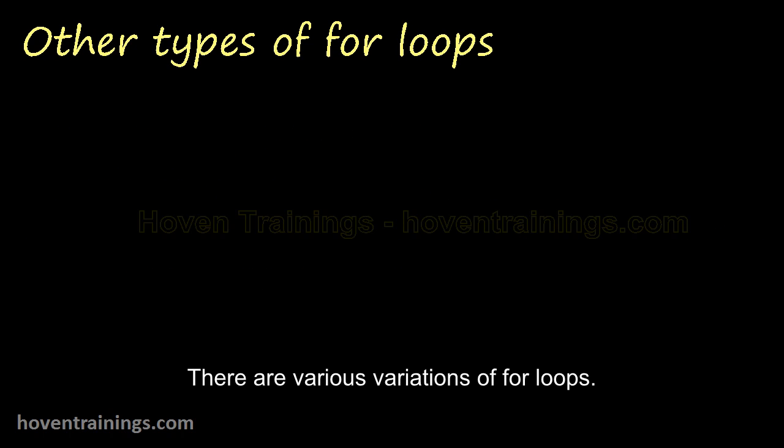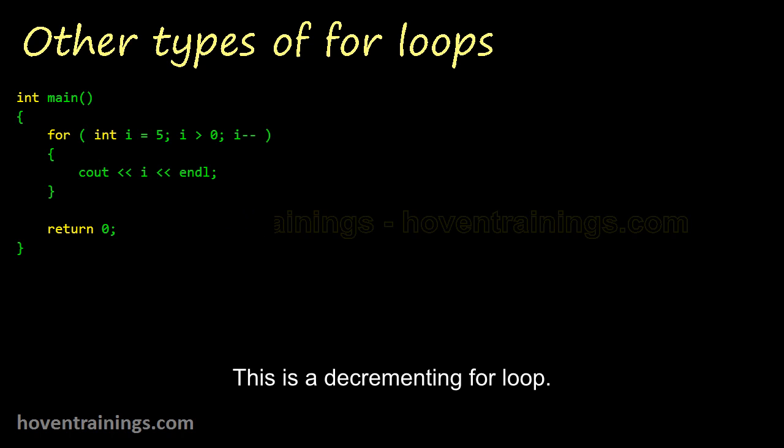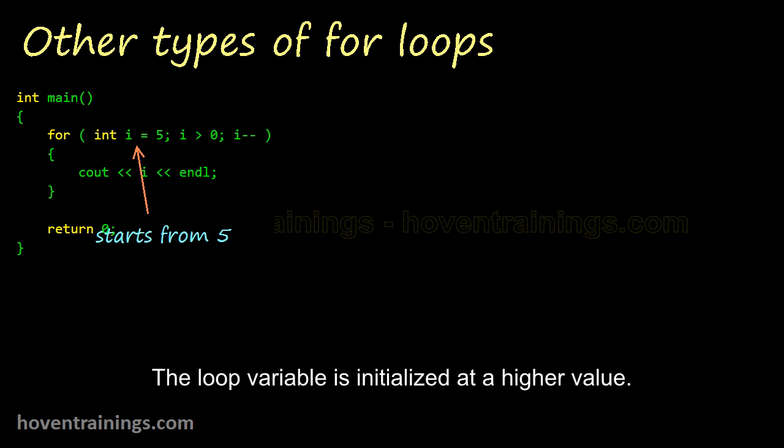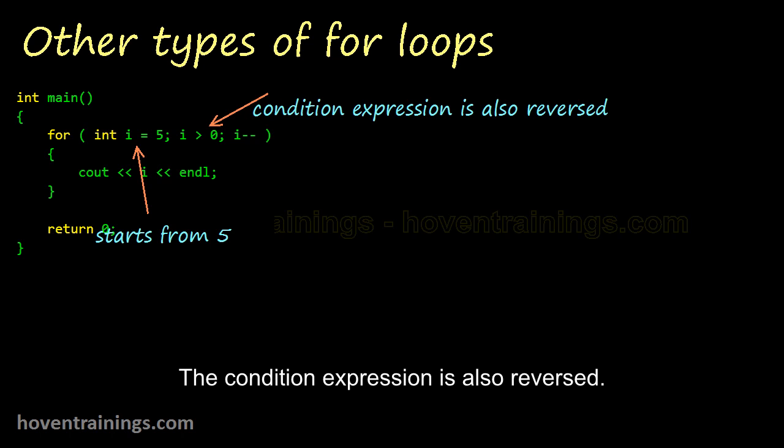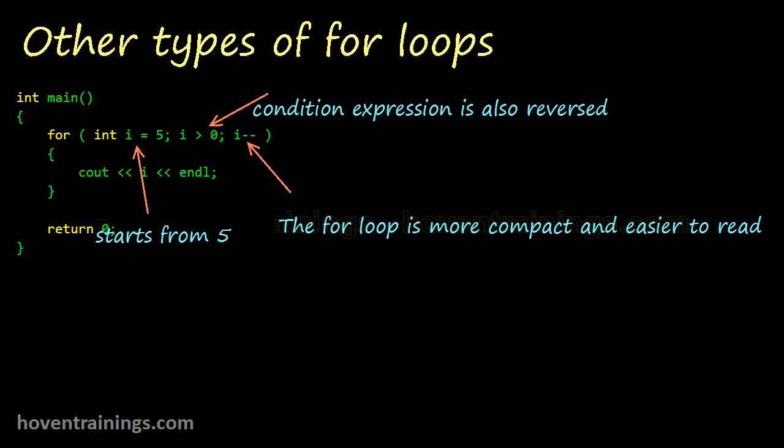There are various variations of for loops. Let me show them here. This is a decrementing for loop. The loop variable is initialized at a higher value. The condition expression is also reversed. The loop continues till the variable is more than zero. Here the loop variable decreases by one each time.